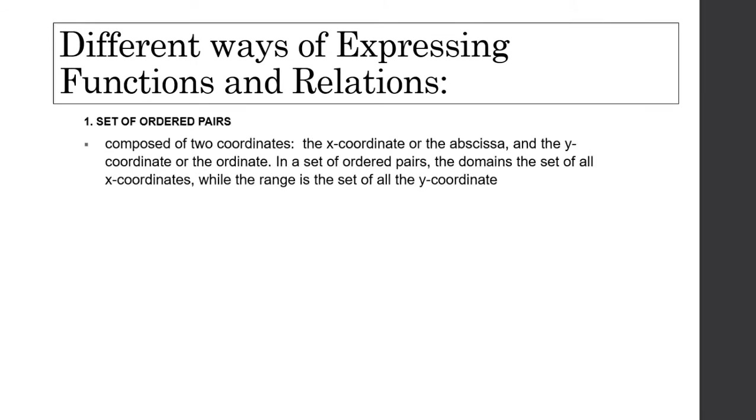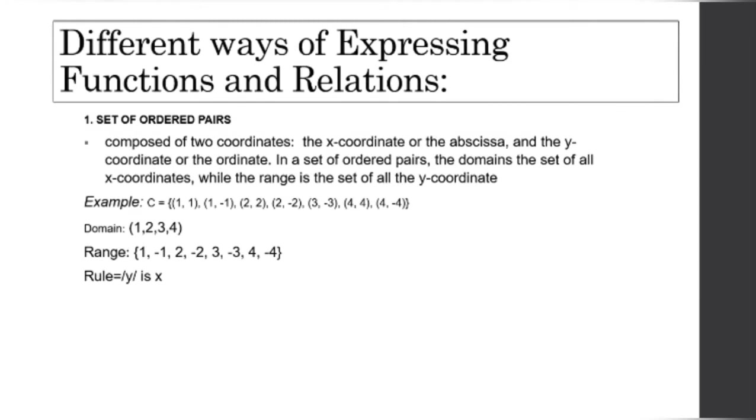There are many different ways to express functions and relations. We have set of ordered pairs composed of two coordinates, the x-coordinate and the y-coordinate. In a set of ordered pairs, the domain is the set of all x-coordinates, while the range is the set of all y-coordinates. For example, we need to determine if this given set of ordered pairs is a function or merely a relation.